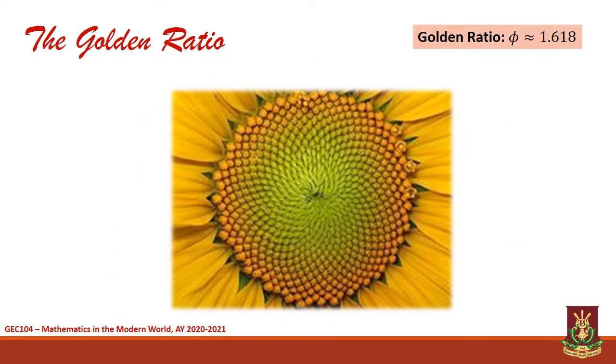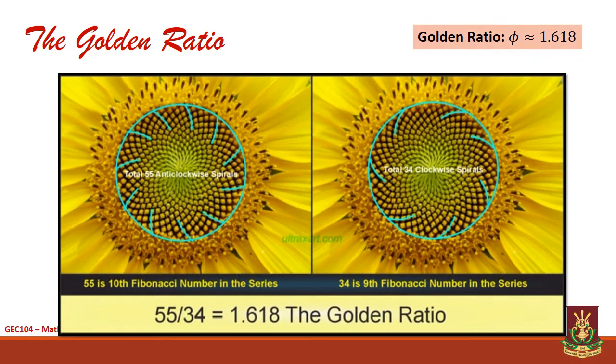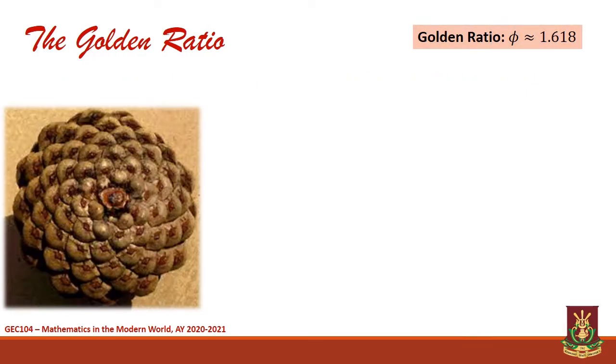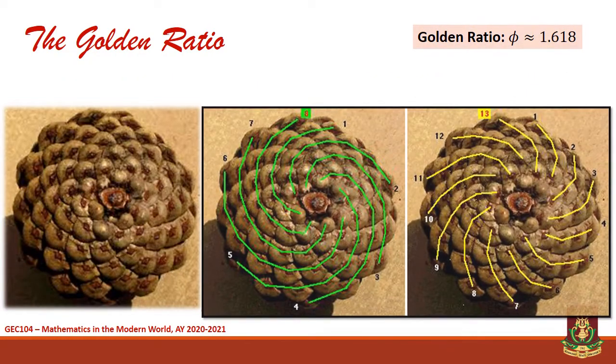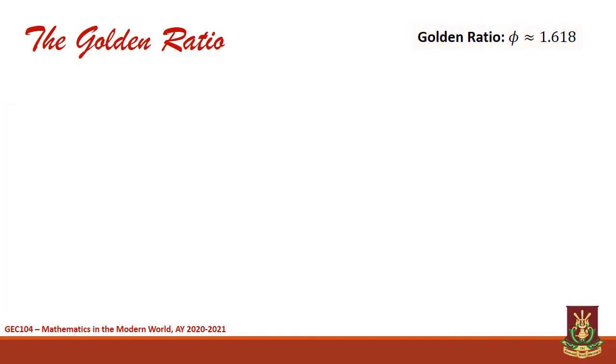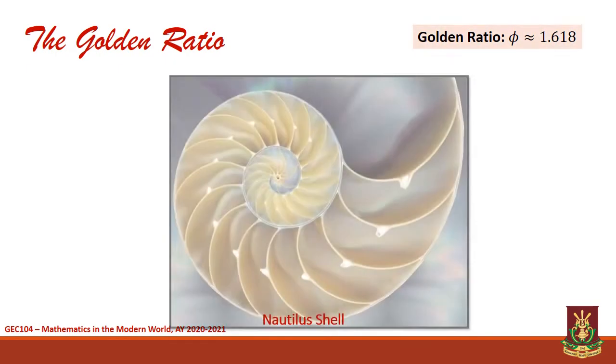The significance of these numbers and patterns lie not from within but from where we find them. Let us consider this sunflower. Observe that the number of spirals displayed by its florets counts to 55 and 34, which are consecutive Fibonacci numbers. The same pattern behavior can also be seen in this pine cone. Other notable examples are the waves in the ocean, the weather systems, and especially the Nautilus shell.